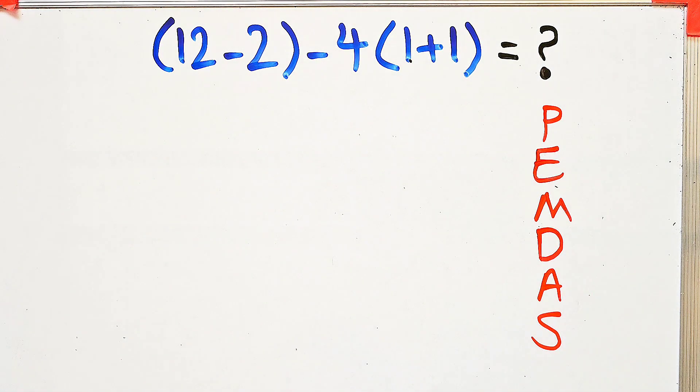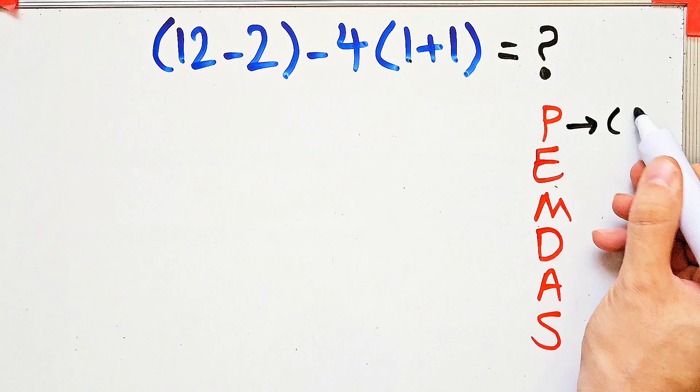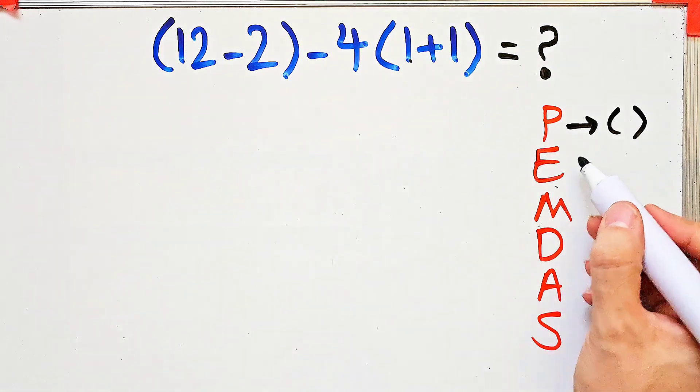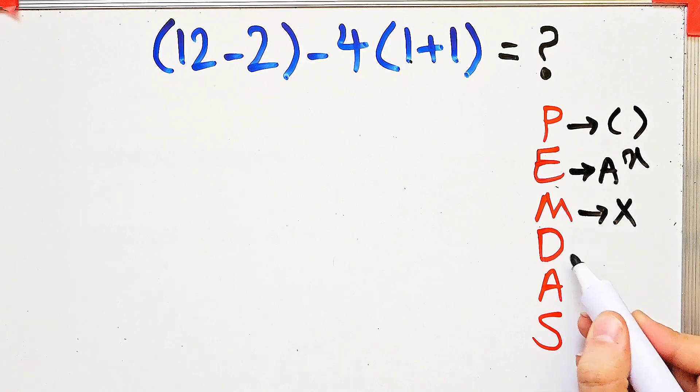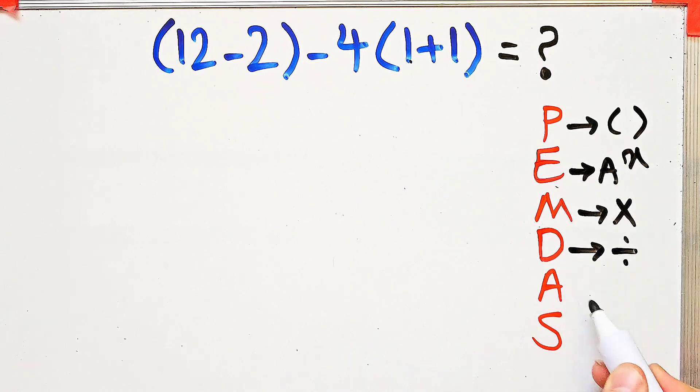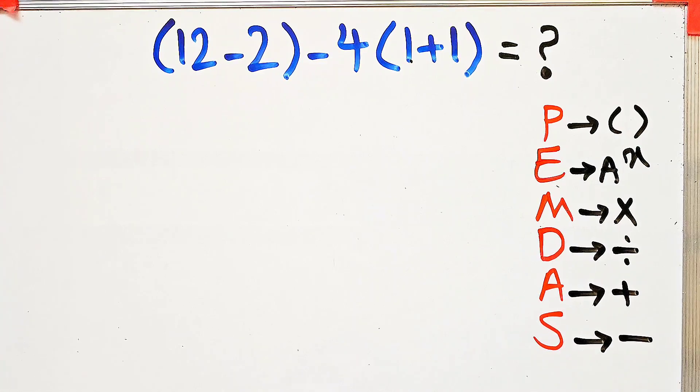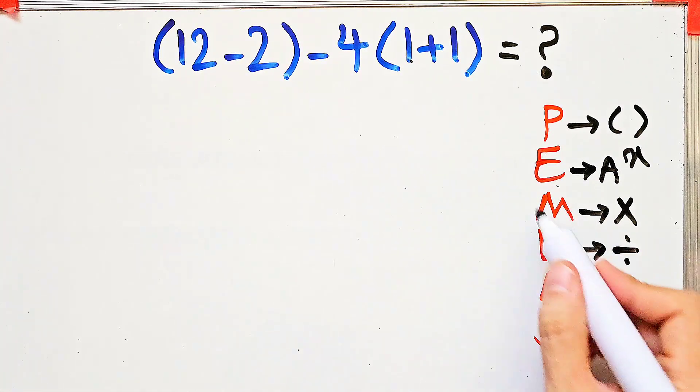In this rule, P stands for parenthesis, E stands for exponent, M stands for multiplication, D stands for division, A stands for addition, and S stands for subtraction.